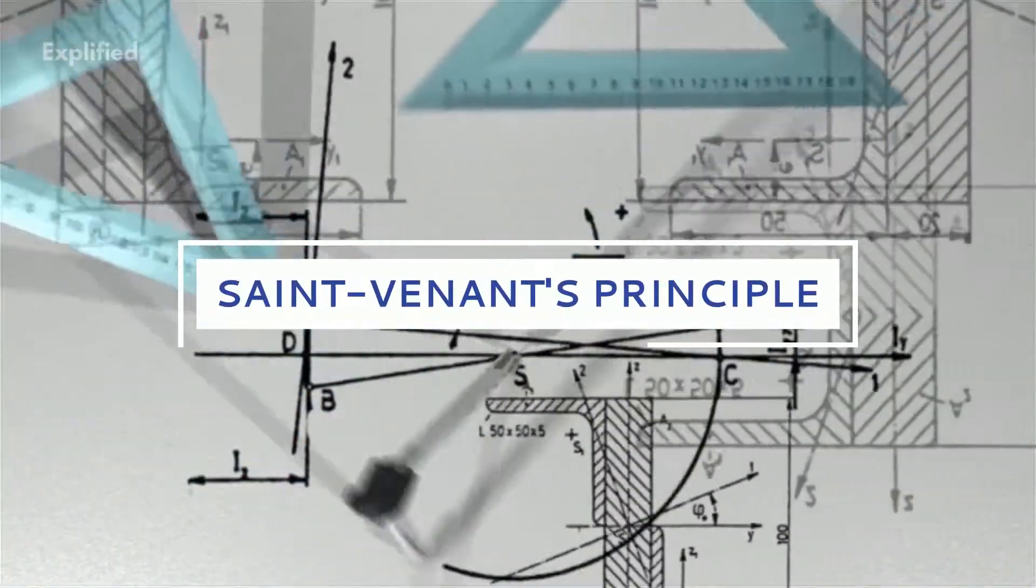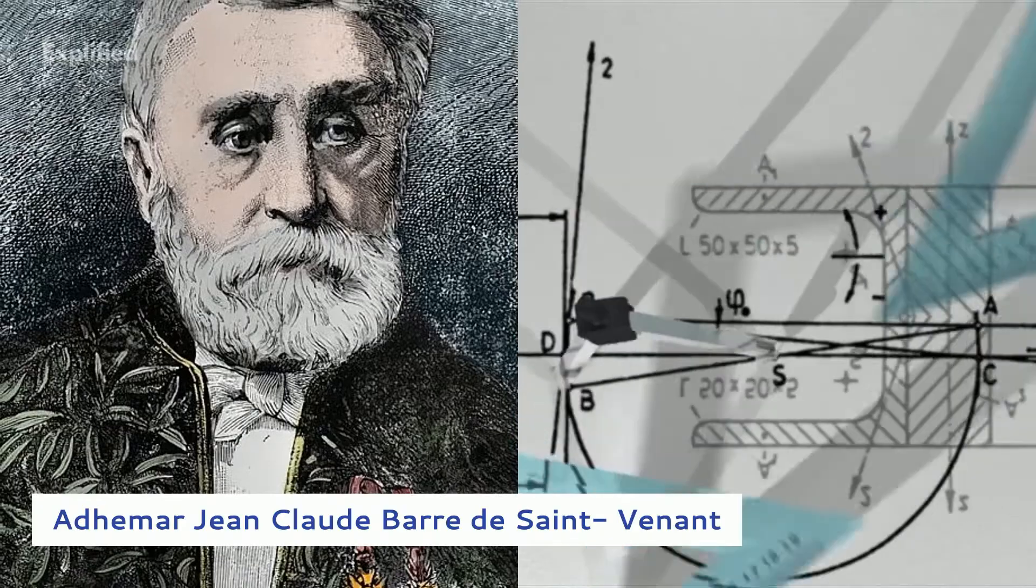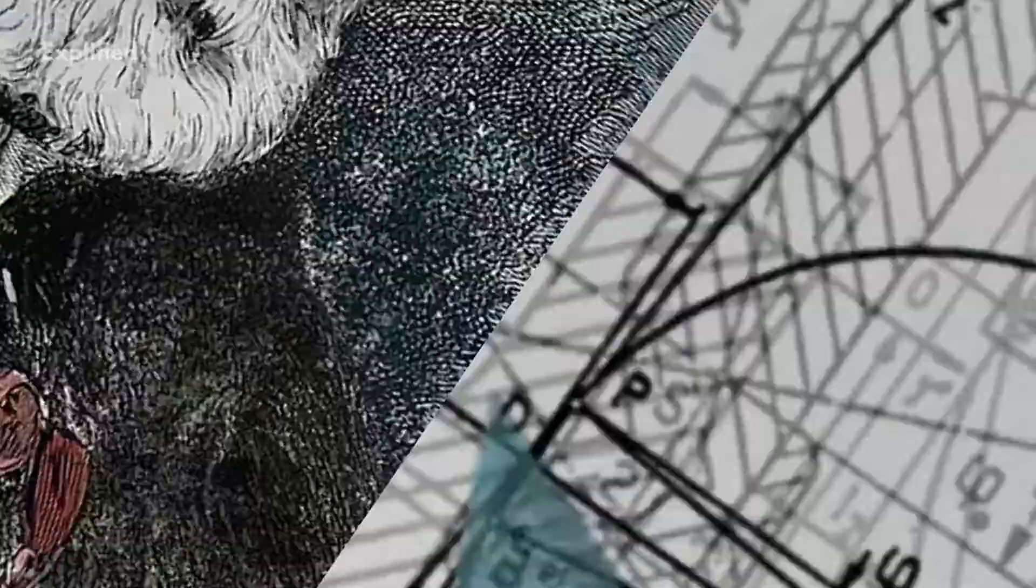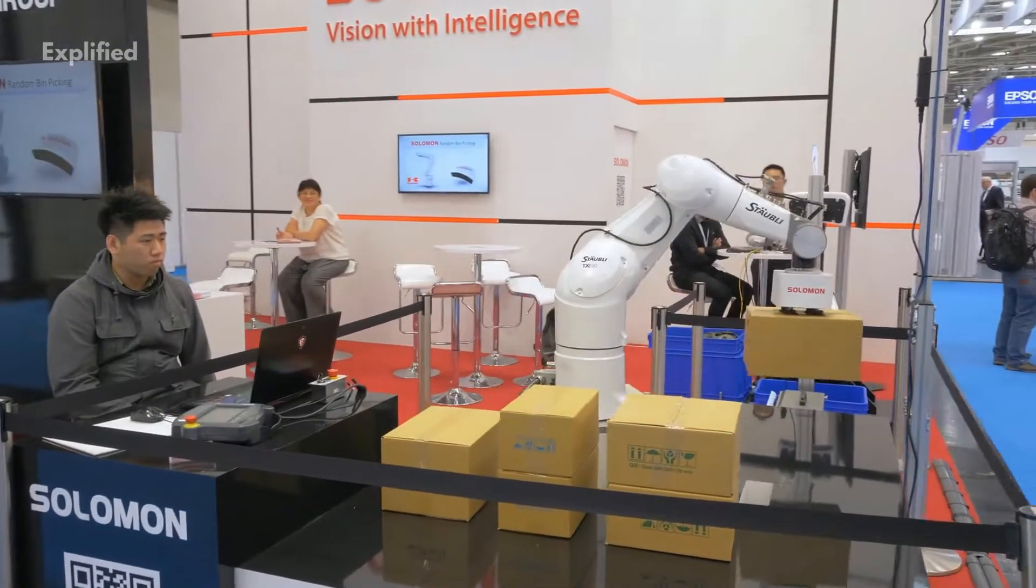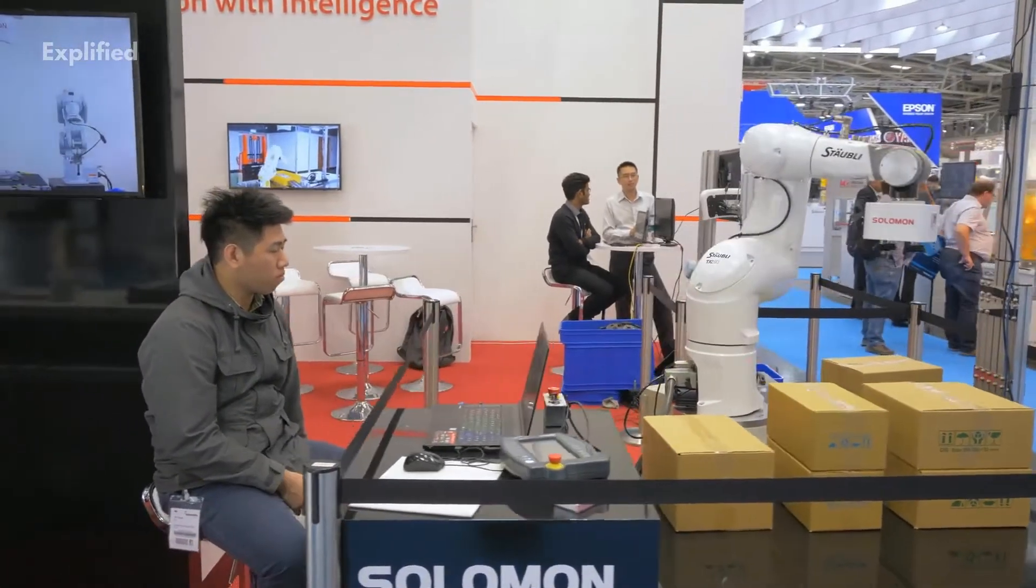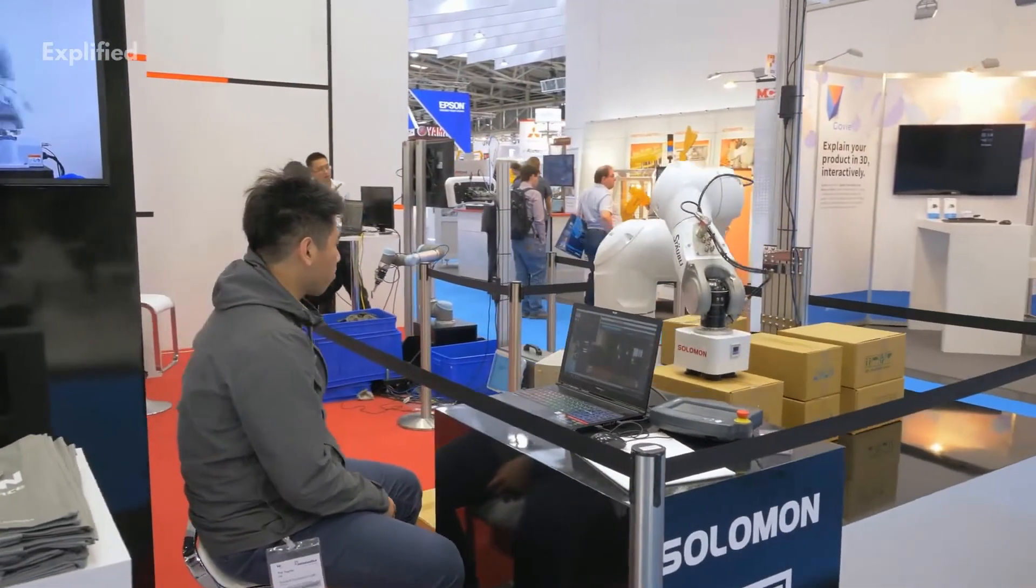The infamous Saint-Venant's principle is named after Adhemer Jean-Claude Bar de Saint-Venant, French elasticity theorist. The principle states that the difference between the effects of two different but statically equivalent loads becomes very small at sufficiently large distances from load.